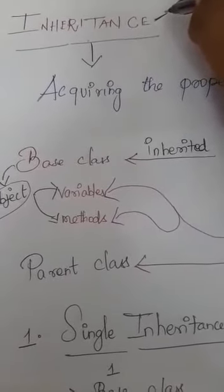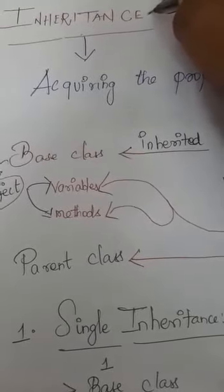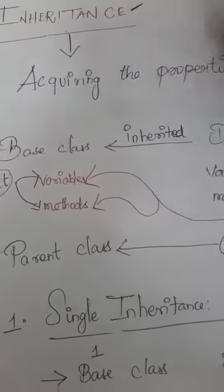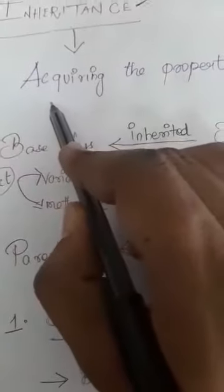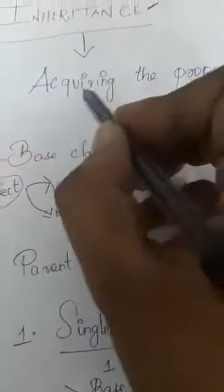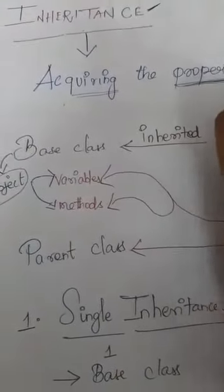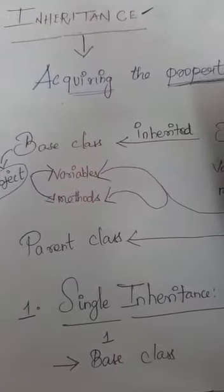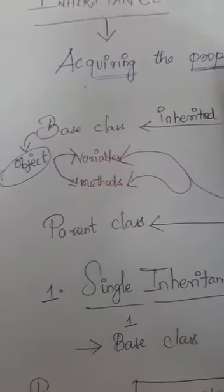Inheritance means you will have two classes — one is base class and another one is derived class. The derived class will acquire the properties of base class. Inheritance means acquiring the properties of the derived class from the base class.